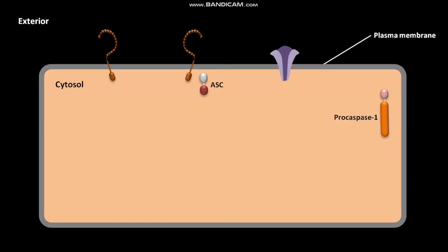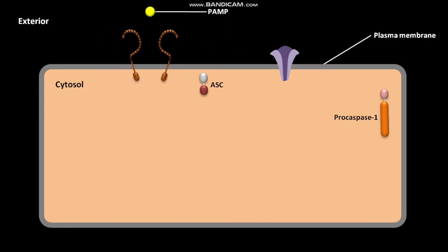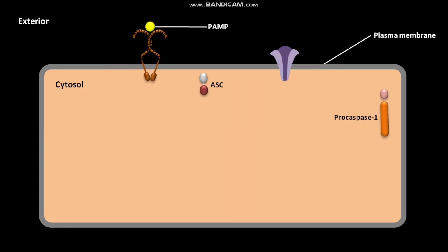The plasma membrane of the cell has PRRs. Here the PRR is a TLR. First of all, a PAMP present exterior to the cell binds to the PRR. This binding activates the NF-κB pathway and MAPK signaling pathways.